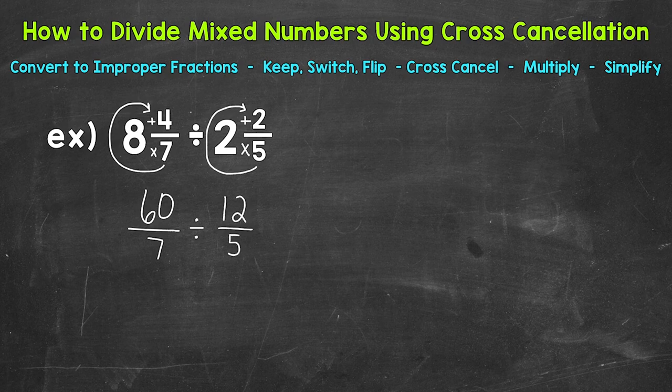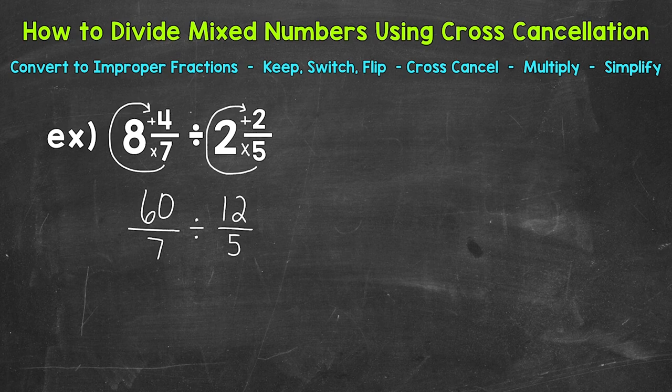Now that we have our mixed numbers converted to improper fractions, we can go through our dividing fractions steps: keep, switch, flip — also known as keep, change, flip. There are different words out there for the steps but they all mean the same thing. These improper fractions are equivalent to the mixed numbers: 60 sevenths is equivalent to 8 and 4 sevenths, and 12 fifths is equivalent to 2 and 2 fifths. When we convert to improper fractions, we're not changing the value of the problem at all.